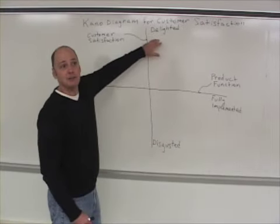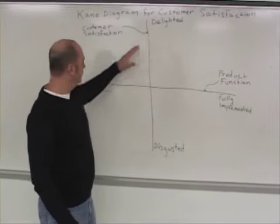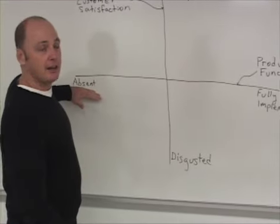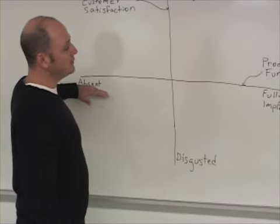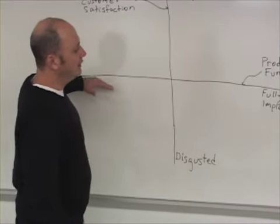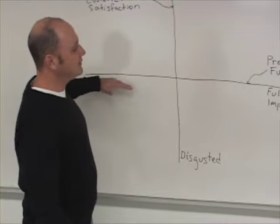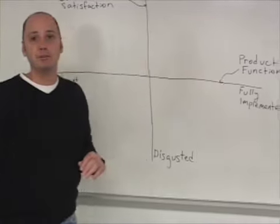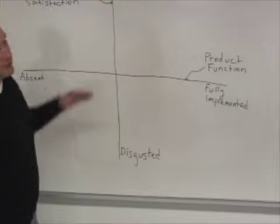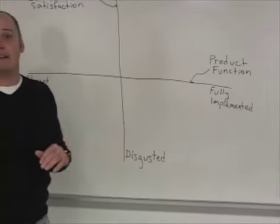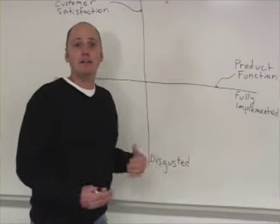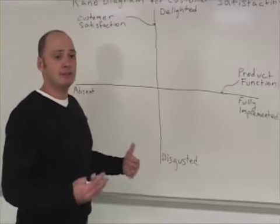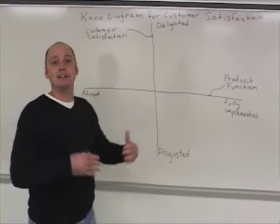Along the top, they're delighted. On the x-axis, on the left side, if it's absent, that represents the degree that a feature is absent, or on the right, the degree that it's fully implemented. What Kano said was that all features of a product are not created equal.